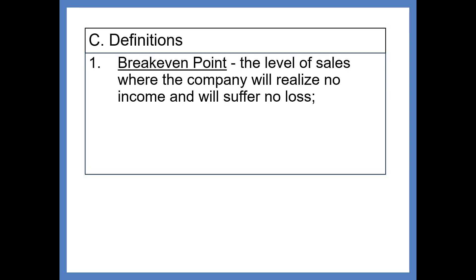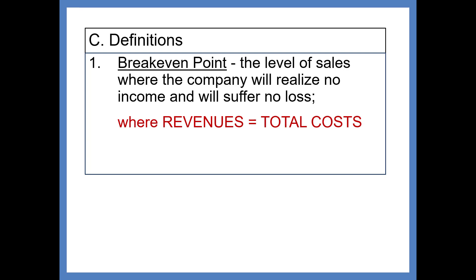We need to understand a few basic definitions before we work an example. First is the breakeven point. The breakeven point is the level of sales where the company has no income and no loss — in other words, it's where revenues equal total costs and profit is zero. Companies may not desire to break even, but they certainly want to know the breakeven point — what sales must be achieved before we lose money.